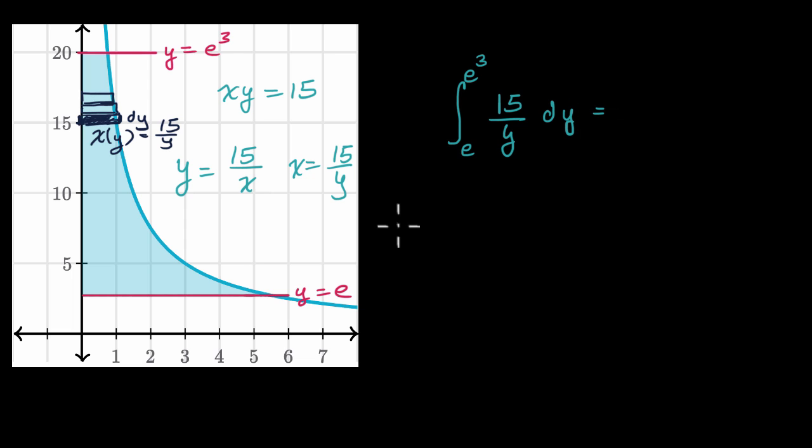This is going to be equal to—the antiderivative of 1/y is the natural log of the absolute value of y. So it's 15 times the natural log of the absolute value of y. And then we're going to evaluate that at our endpoints, at e³ and at e.